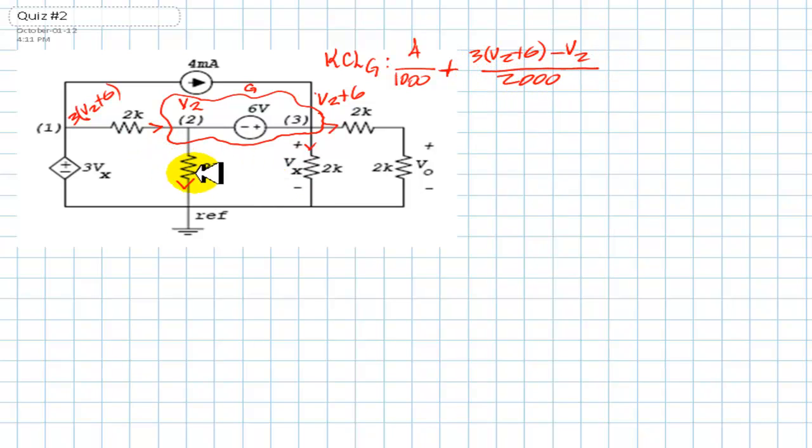And that is equal to currents leaving the node. Beginning with this one. This is V2 divided by 2,000. Plus the one here, that is V2 plus 6, divided by 2,000. V2 plus 6, divided by 2,000. Plus the last one, which is this one, V2 plus 6, divided by 4,000.